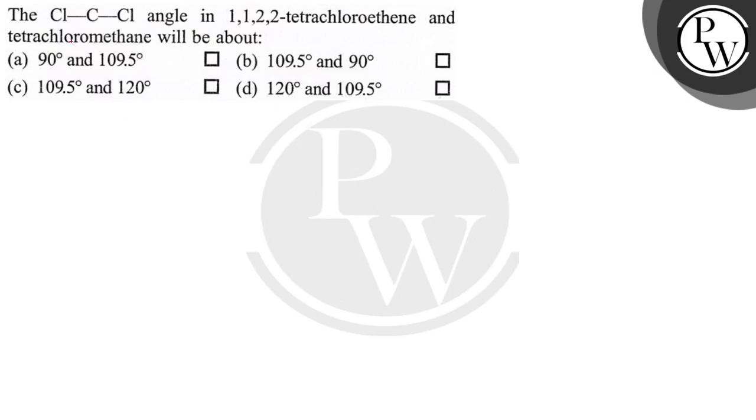Hello, let's read the question. The question says: the Cl-C-Cl angle in 1,1,2,2-tetrachloroethane and tetrachloromethane will be about: (a) 90° and 109.5°, (b) 109.5° and 90°, (c) 109.5° and 120°, and (d) 120° and 109.5°.